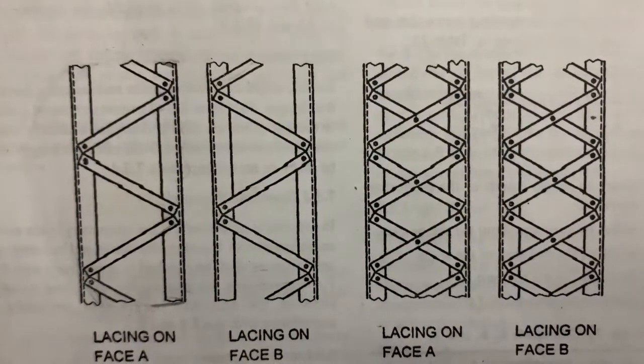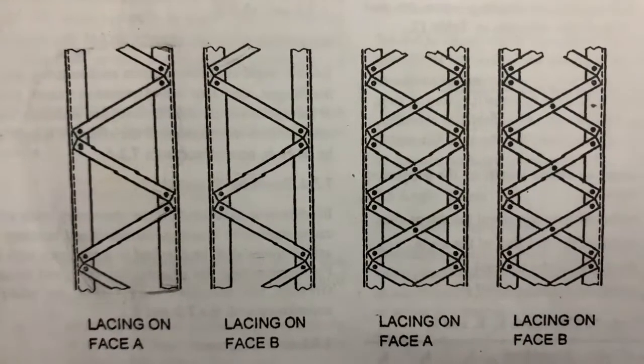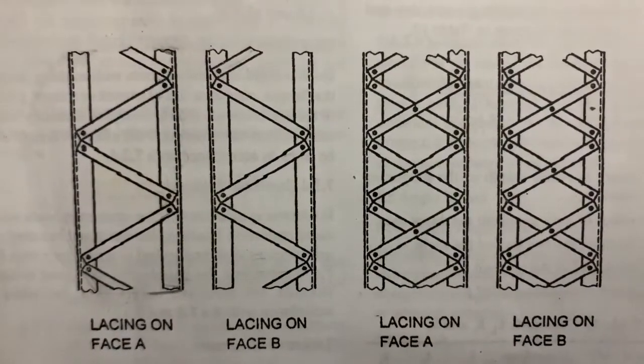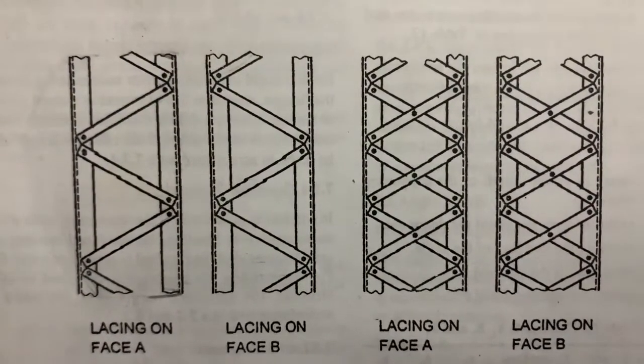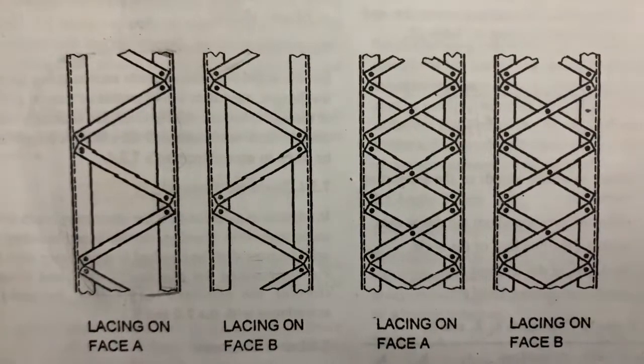Hello everyone, in this video I'll show you about two types of columns in design of compression members. The first one is a laced column and the second one is a batten column.